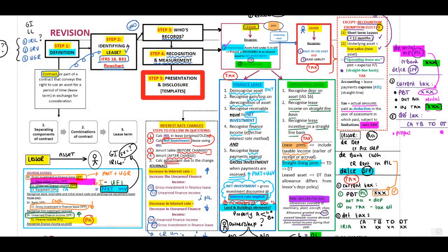Step five: presentation and disclosure. Remember presentation on the face and disclosure in your notes. I'm not going to work through this — I have provided you with templates. You need to know your steps, know in whose records you are, and ensure that your standard is properly highlighted, underlined and flagged. Should they require you to prepare a note in terms of IFRS 16, either for the lessee or the lessor, you should be able to immediately open your standard and identify what you need to include. Study the templates provided. Good luck — this is actually a very nice standard if you know your principles.